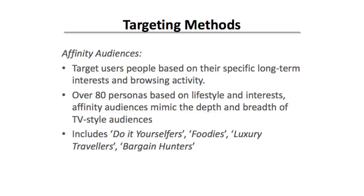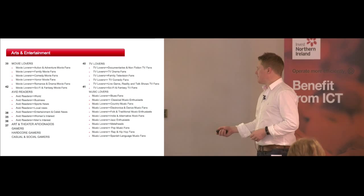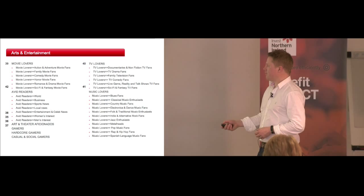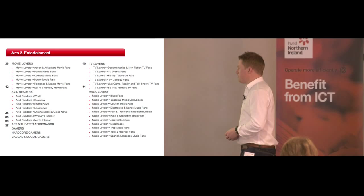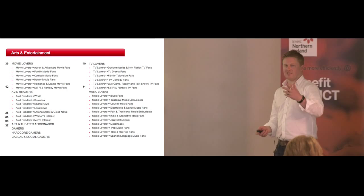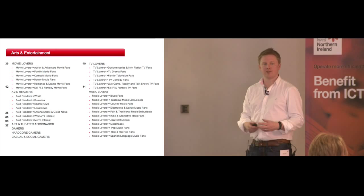Affinity categories include do-it-yourselfers, foodies, luxury travelers, bargain hunters, metalheads, sci-fi and fantasy TV lovers, and gamers. We can fall into multiple categories. For example, if you sell science fiction figures, you might target people in the sci-fi and fantasy movie fan section. They're hyper-qualified — they've had a long-term interest, they haven't just visited one site once. They have a long-term interest in this stuff, so you're qualifying your audience the whole time. There are 80 of these affinity categories.